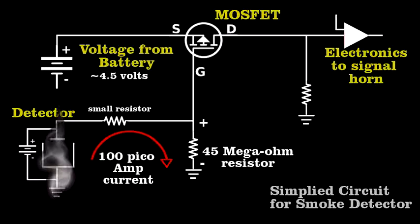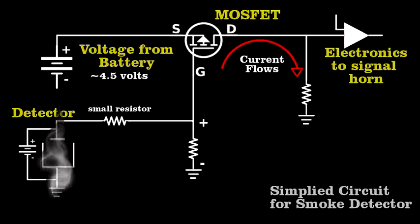If smoke enters the chamber, the tiny current stops. The MOSFET allows current to flow in this section of the circuit, which triggers the horn.